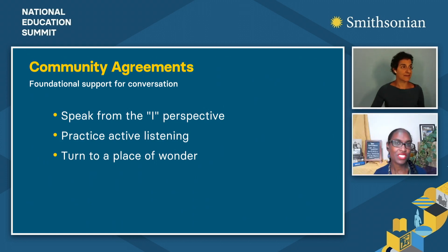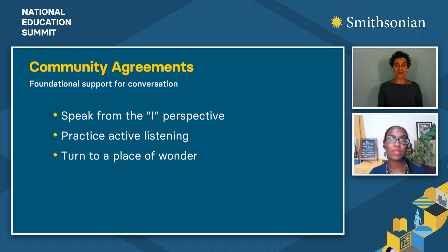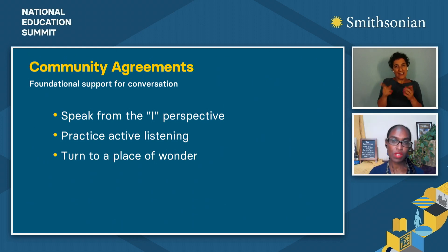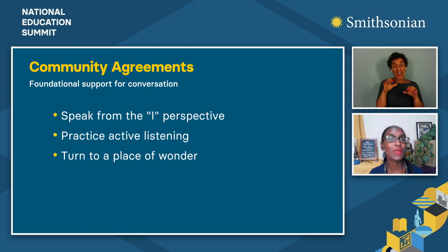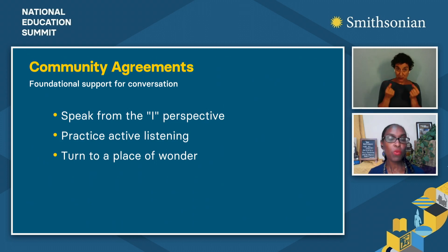Conversations that touch on our identities need to be approached with care and community building. One step we can take is to establish group agreements. First: speak from the 'I' perspective — share only things for which you have personal experience or knowledge. Second: practice active listening, which helps us slow down, listen with intention, and build empathy. Third: turn to a place of wonder — when you hear something you don't understand or disagree with, ask 'say more about that' or 'what do you mean by that?'